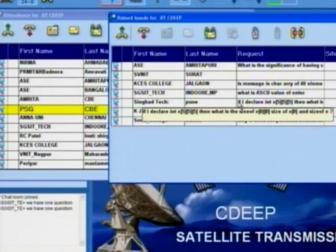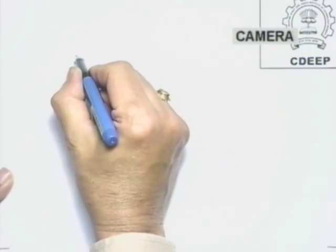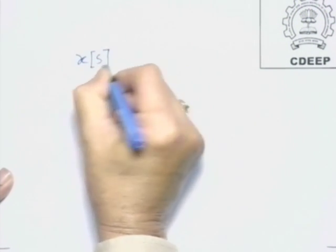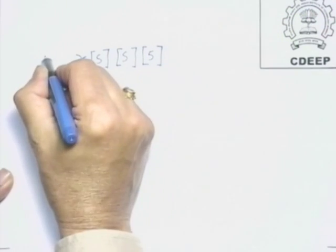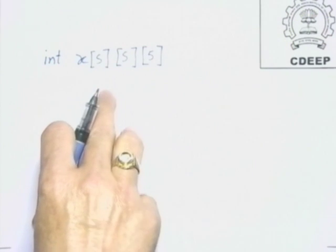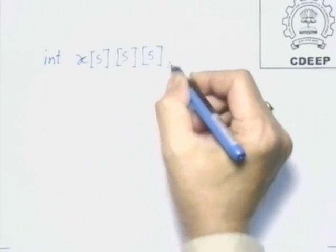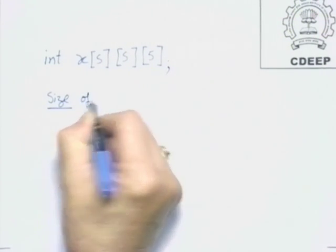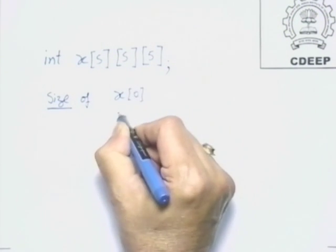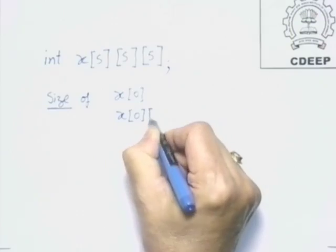Seager Institute of Technology Pune has a query: if I declare int x[5][5][5], then what is the size of x[0][0], size of x[0], and size of x?